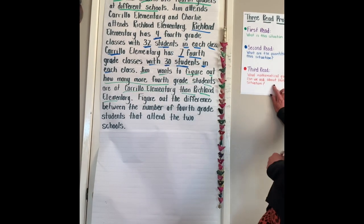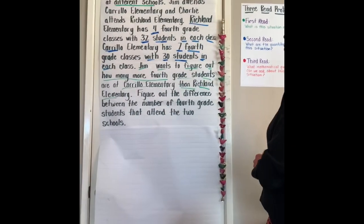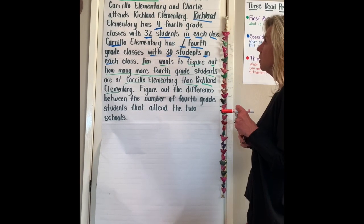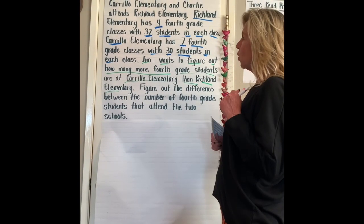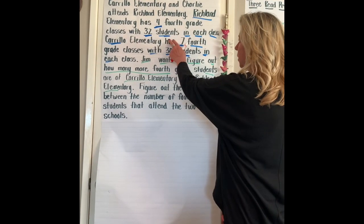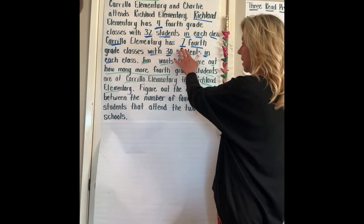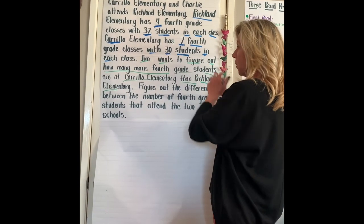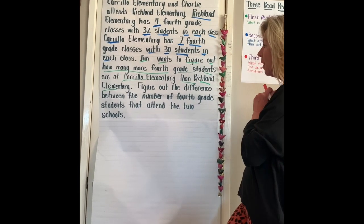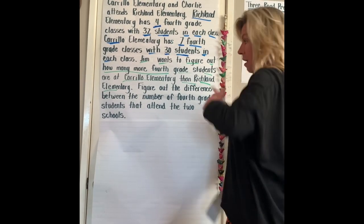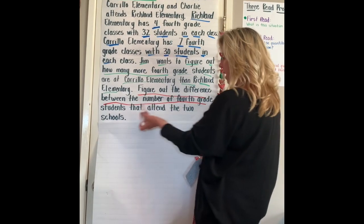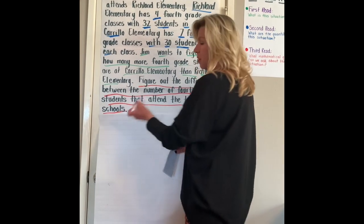On our third read, let's look at the mathematical question that we need to answer. Jim attends Carrillo. Charlie goes to Richland. Richland has four fourth grade classes with 32 students in each class. Carrillo has seven fourth grade classes with 30 students in each class. Jim wants to figure out how many more fourth grade students are at Carrillo Elementary than Richland Elementary. Figure out the difference between the number of fourth grade students that attend the two schools.